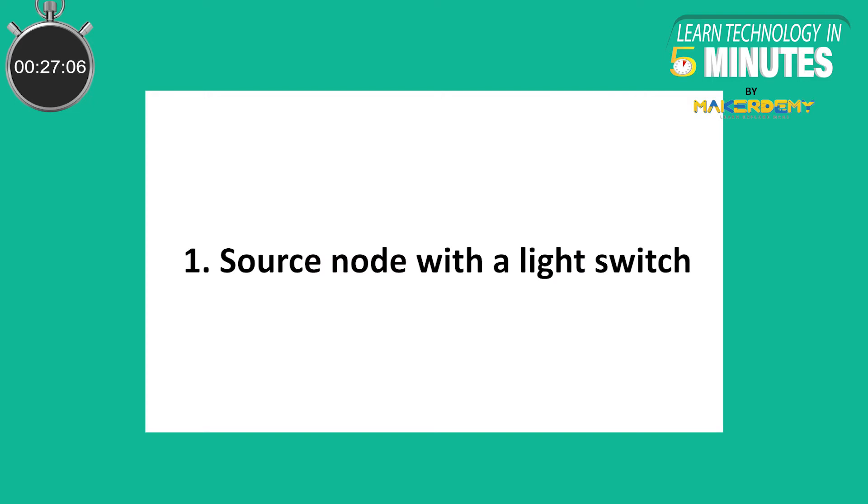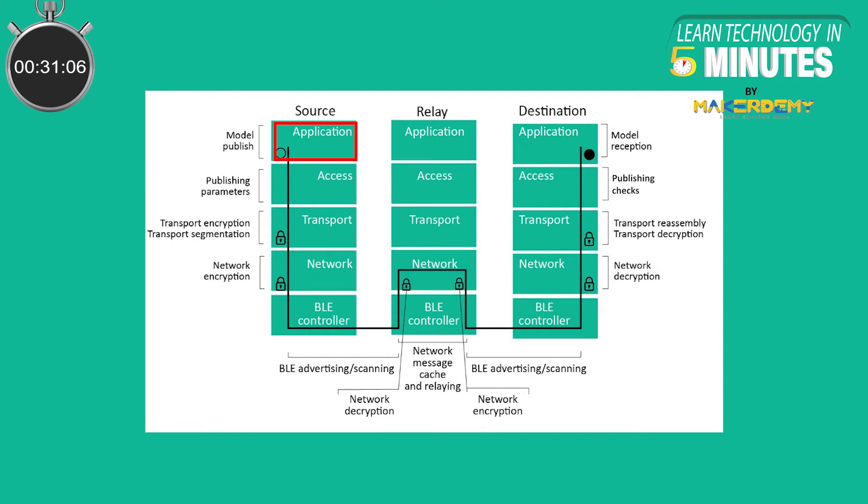Source node with the light switch. The application calls the light switch model's publish function. The model includes an on or off message in a publishing packet with an operation code and sends it to the access layer.